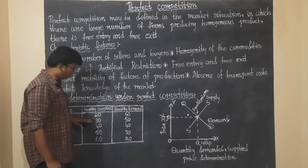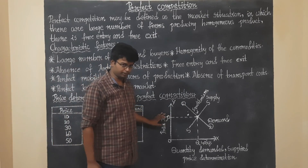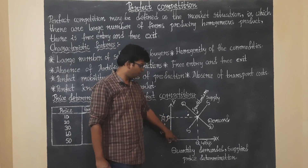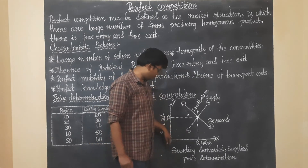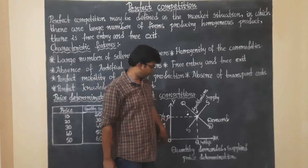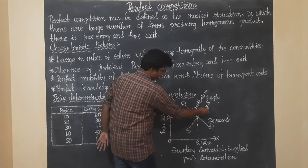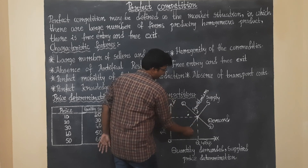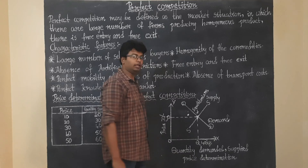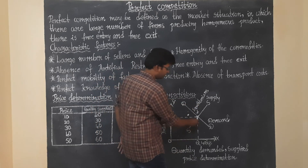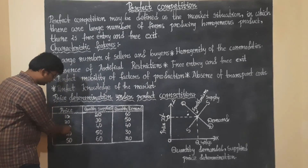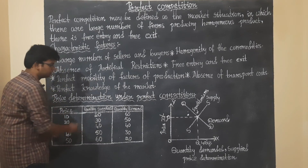Clear students? Now let's see how to read the graph. On the X-axis we have quantity demanded and quantity supplied, and on the Y-axis we have the price of the commodity. We can draw a supply curve and a demand curve. Where these two curves intersect is the equilibrium point — at the price of 30 rupees, supply equals demand at 40 units.